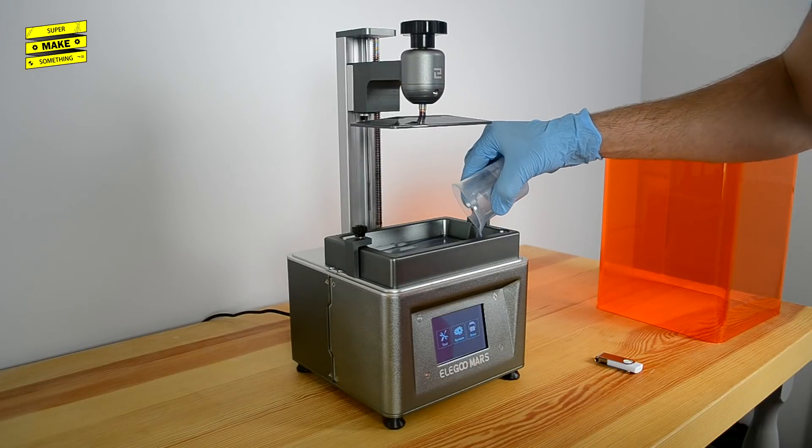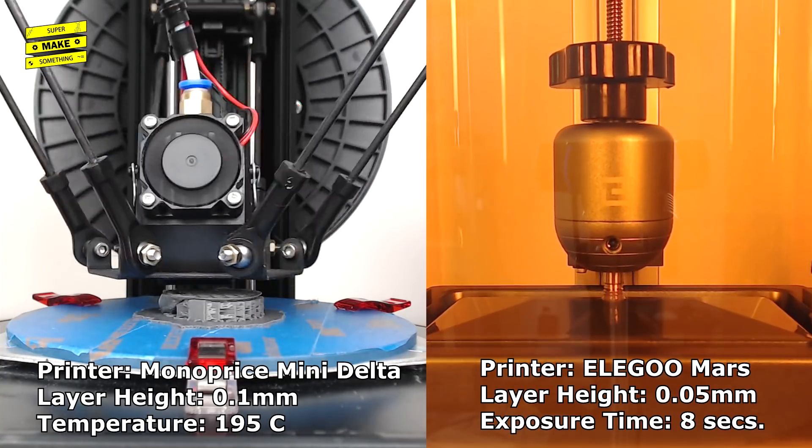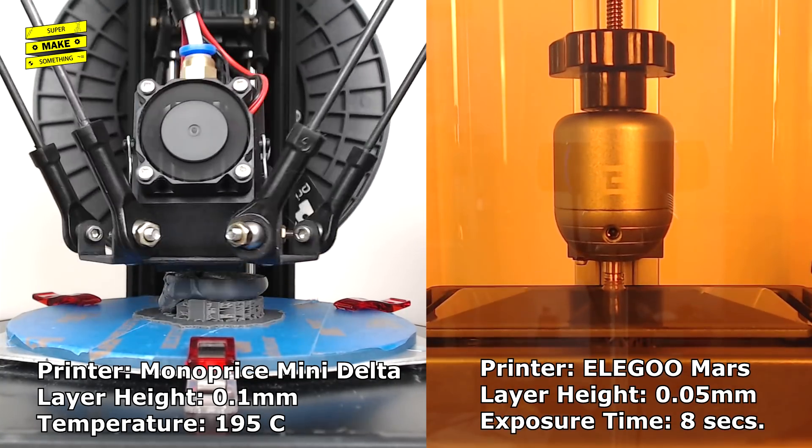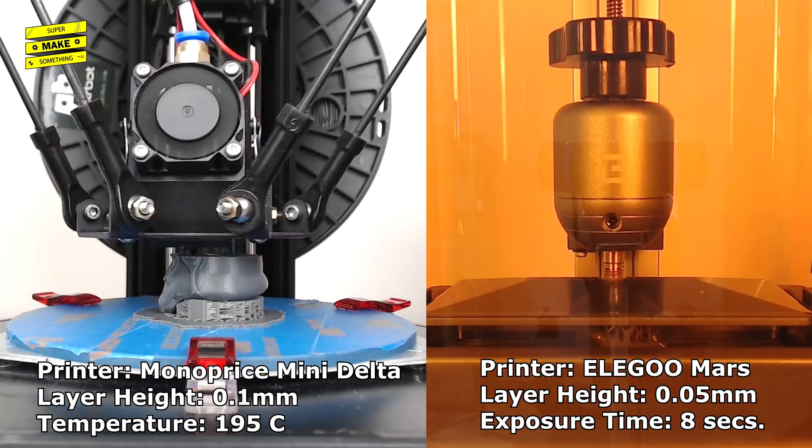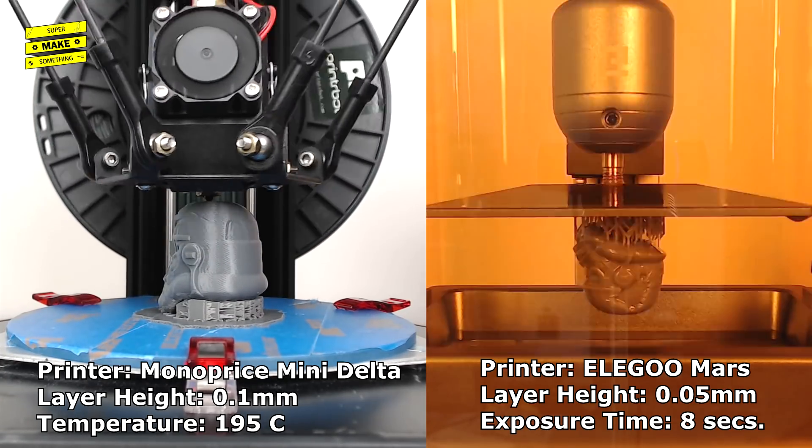After adding more resin to the vat, I plugged in the USB drive into the printer and started the print. Interested to see how the Elegoo Mars compares to my other machines, I also printed the same model on my Monoprice Mini Delta FDM machine. The parameters I used for each print can be seen on the screen.